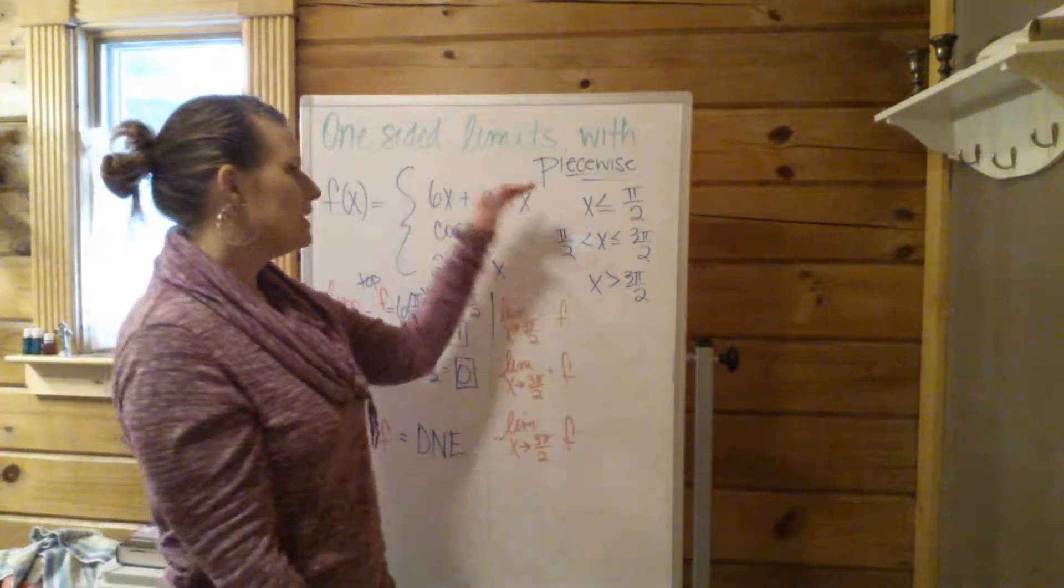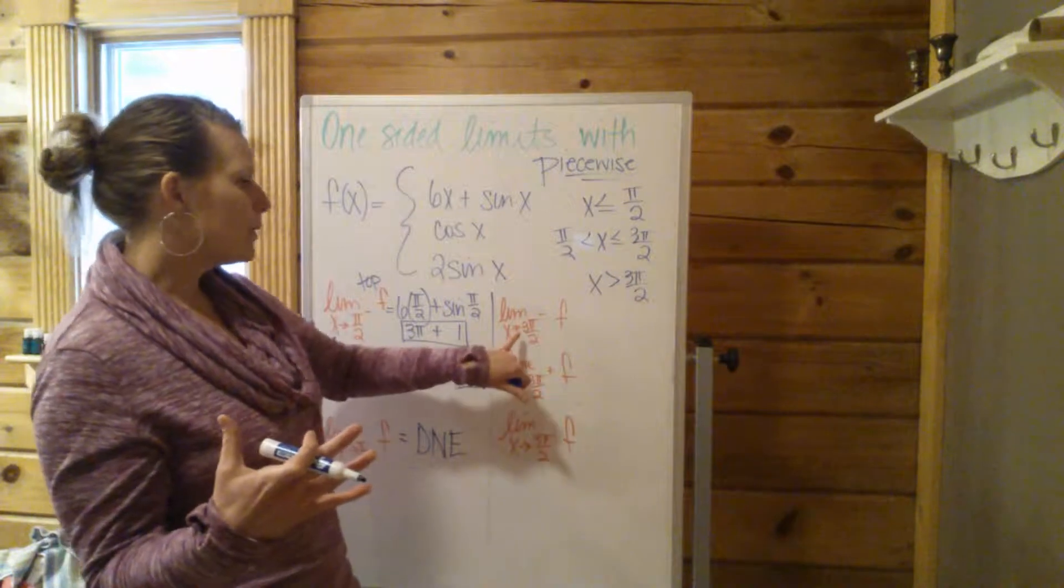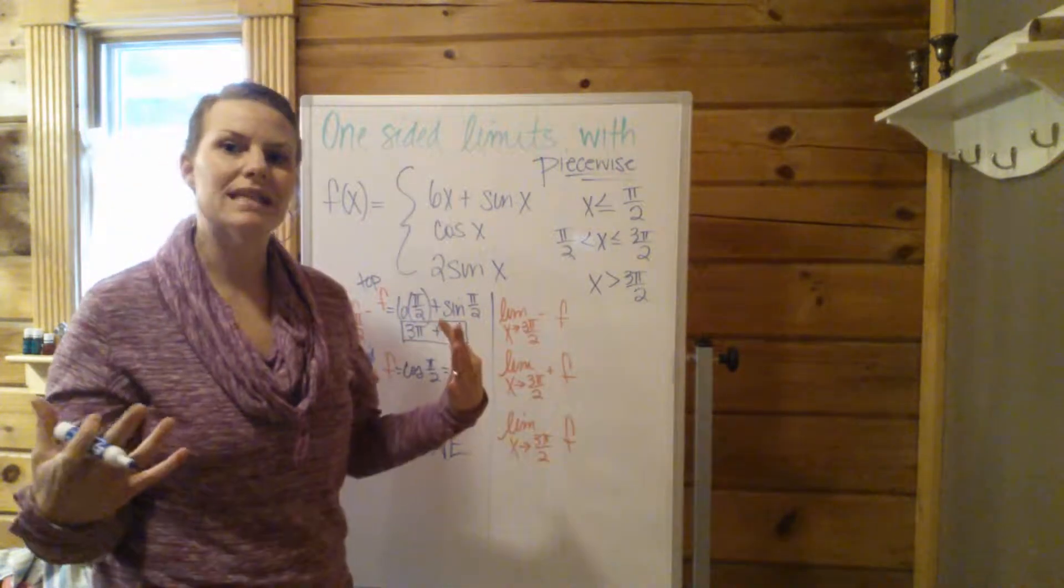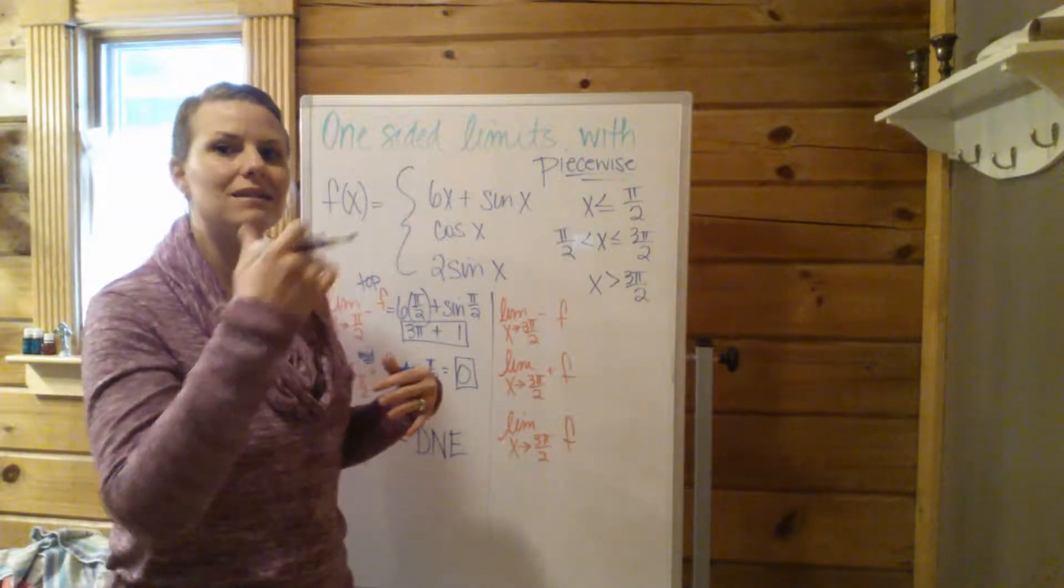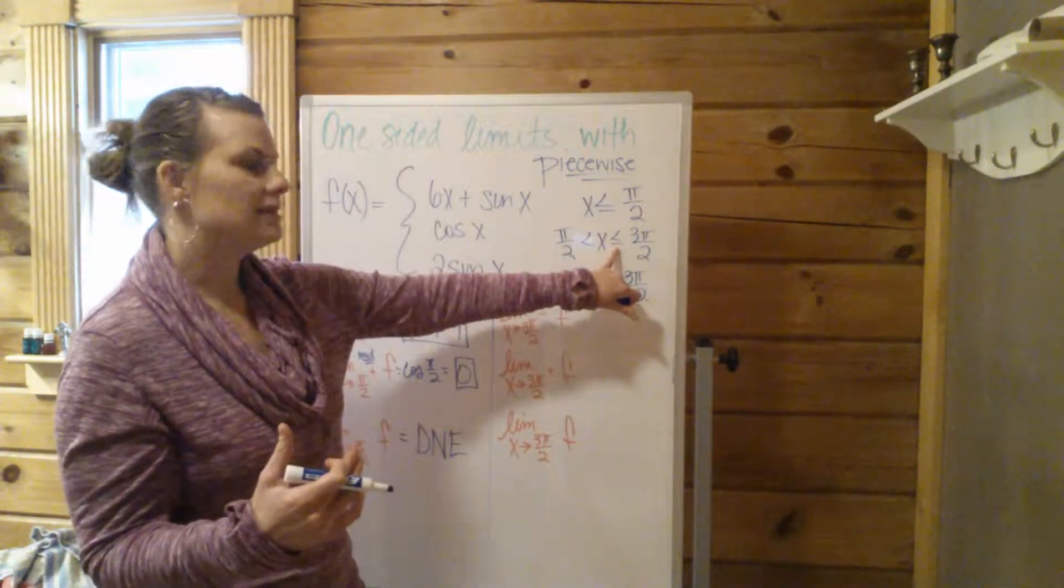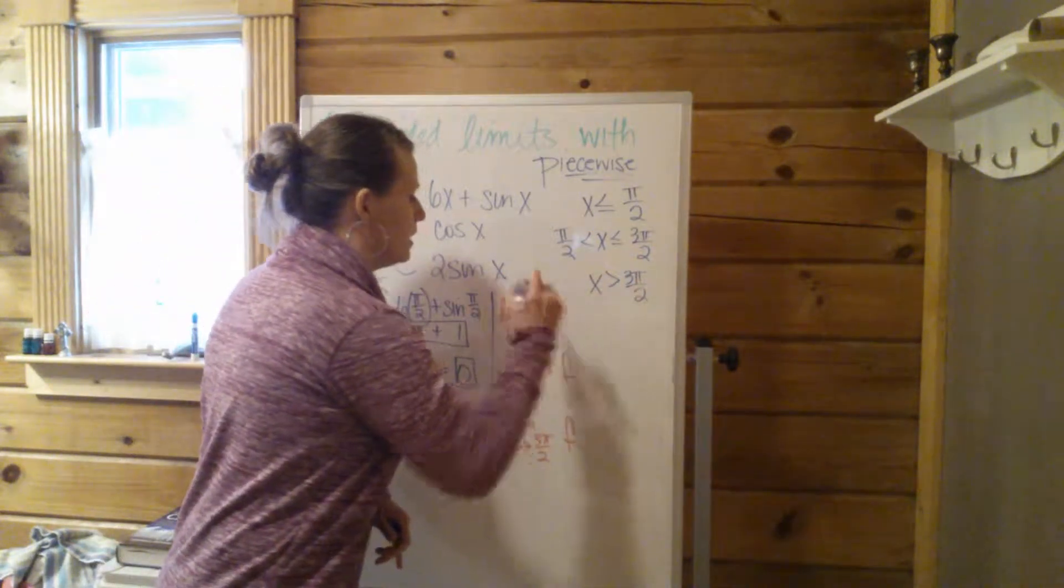Now, this one is a three-parter. So you got to take an extra few steps here. Now we're going to approach 3π/2 from the left. What does that mean? From the left means slightly less than 3π/2. So what line is talking about that? X is less than 3π/2. So that's going to be the middle. Middle again.